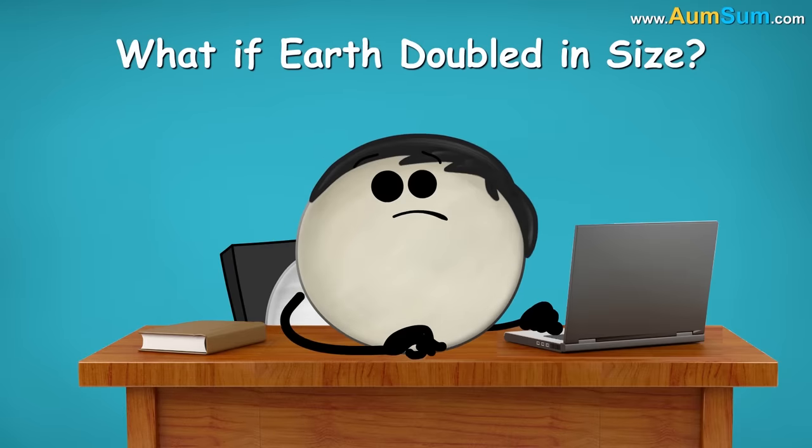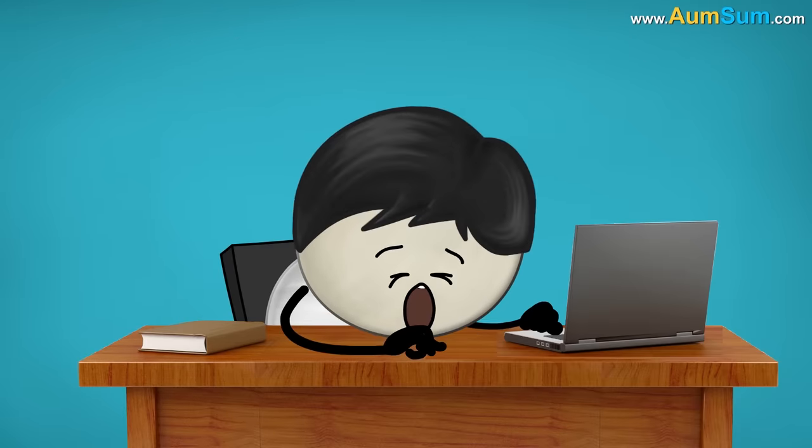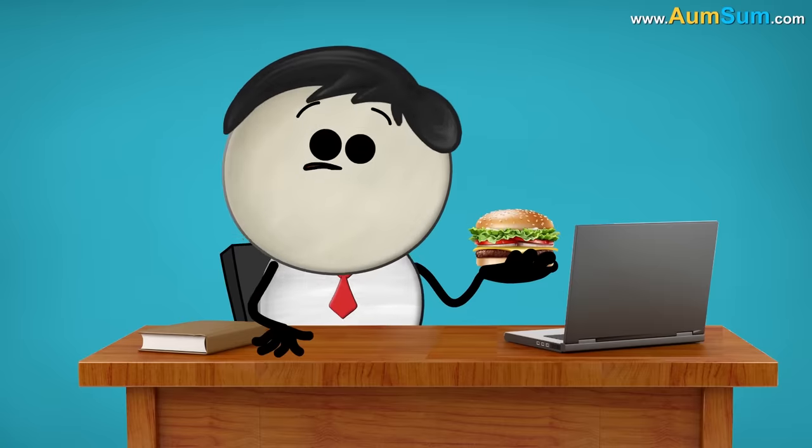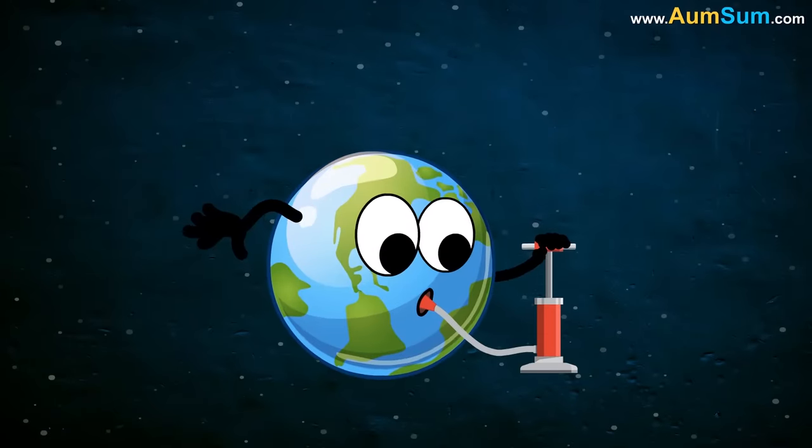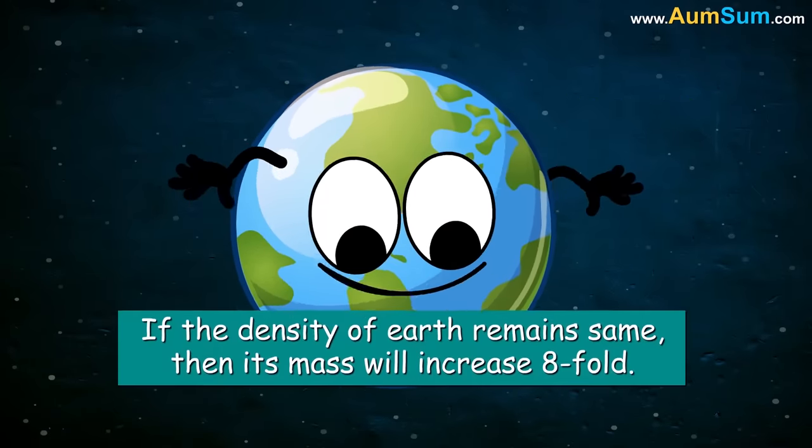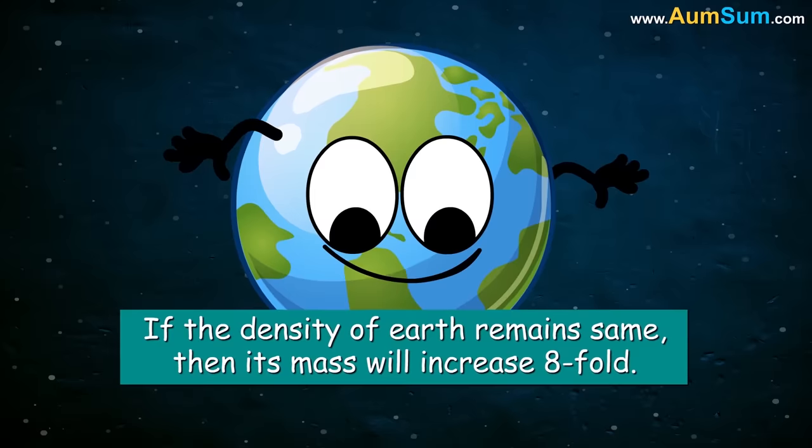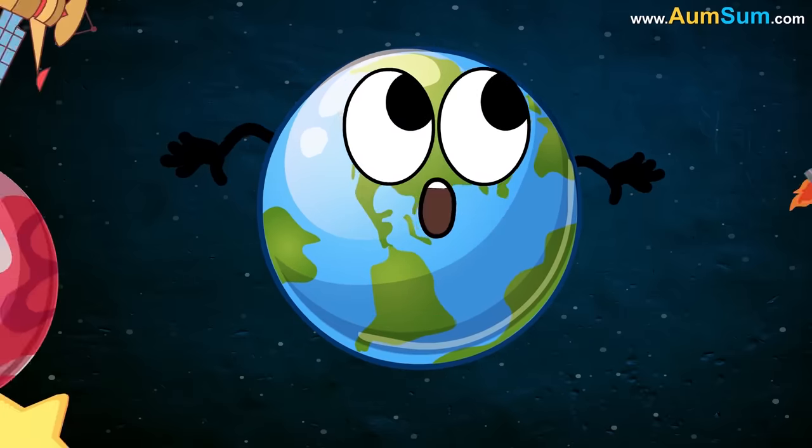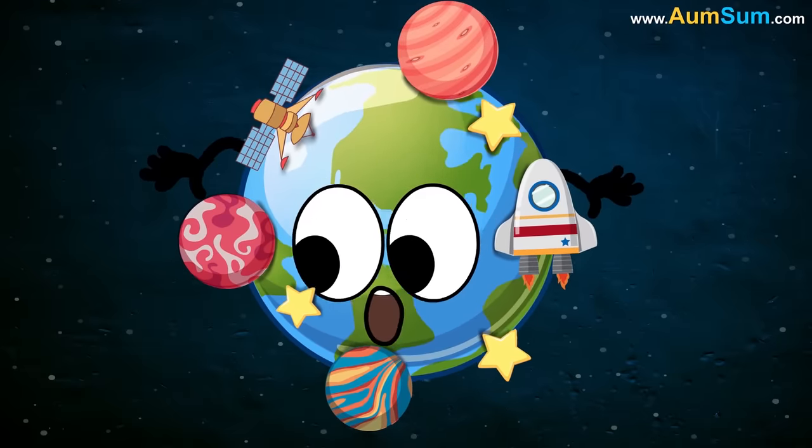What if Earth had doubled in size? Wow. Will my burgers also double in size? Stop it, AumSum. Diameter of Earth would increase from 8,000 miles to 16,000 miles. If the density of Earth remains same, then its mass will increase 8-fold. Earth's gravity will naturally double. This will have major consequences.